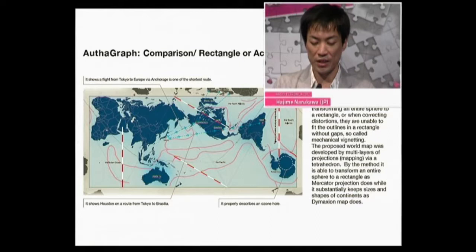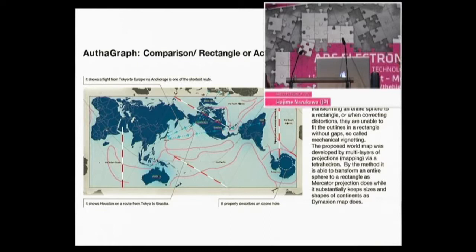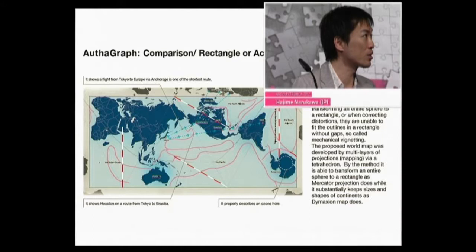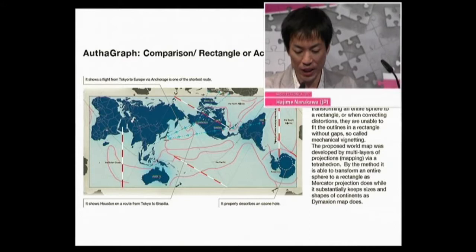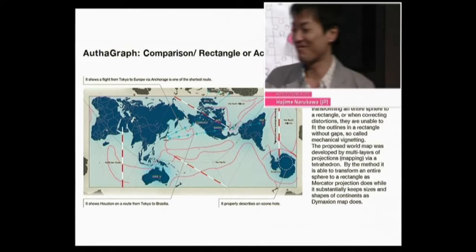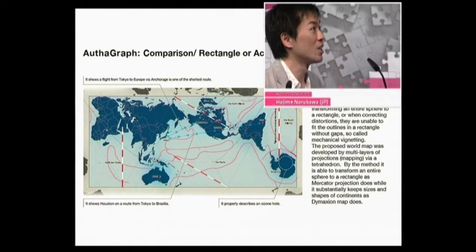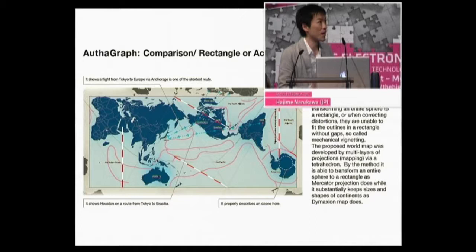Auf diese Weise kann der Betrachter seine Sicht des Planeten und seine Verbindung einbringen. Diese Methode bietet größere Präzision, etwa bei der Darstellung von Grönland – Grönland ist natürlich kleiner als Australien, deutlich kleiner als Australien. Und Sie können auch die Größe und die Form der Antarktis sehen. Wir sehen auch auf einen Blick, warum Houston auf dem Weg von Tokio nach Brasilien liegt – daher landen dort die Flugzeuge zwischen.